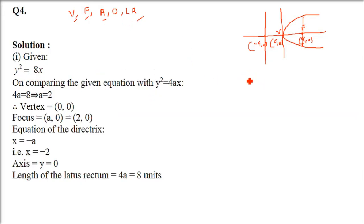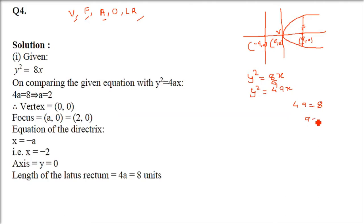Now let's start with the equation y² = 8x. We compare this directly with y² = 4ax. So 4a = 8, which gives a = 8/4 = 2. For y² = 4ax, we know the vertex is (0, 0) and the focus is at (a, 0), which is (2, 0).